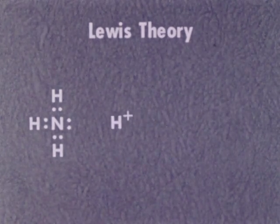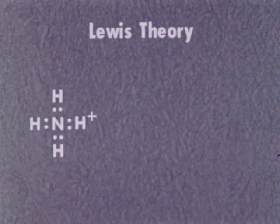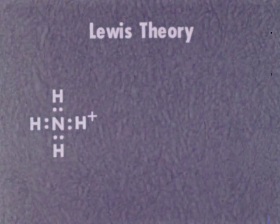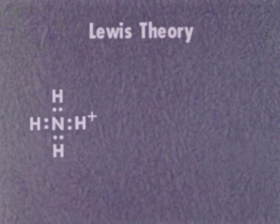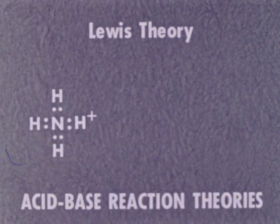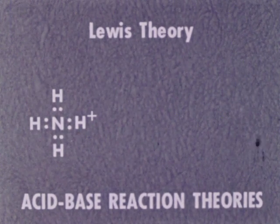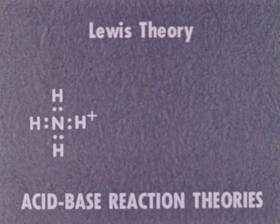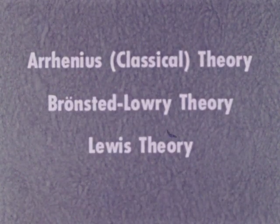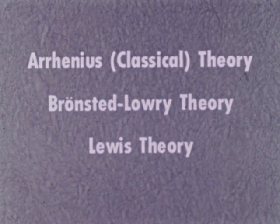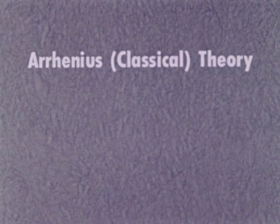The electronic structure of ammonia gas shows an unshared pair of electrons. In 1923, physical evidence led American chemist Gilbert N. Lewis to believe that a proton from an acid readily becomes attached to a proton. An acid then becomes a substance which accepts an unshared pair of electrons. Both the Lewis and the Bronsted-Lowry theories explain acid-base reactions in systems other than the aqueous solution system of Arrhenius. Of the three theories, we'll use the Arrhenius classical theory, remembering that others do exist.